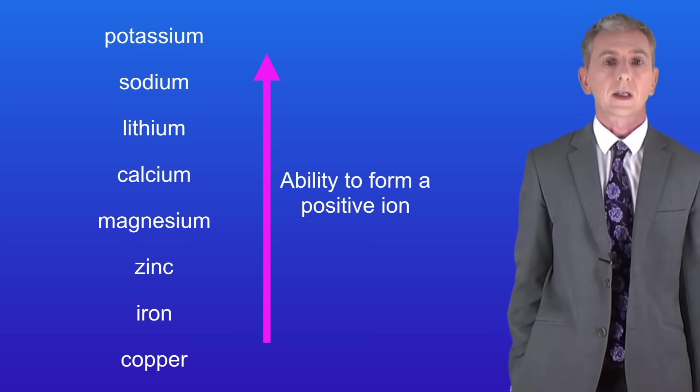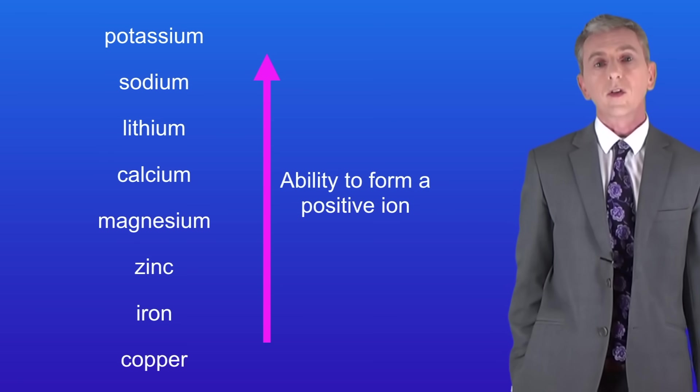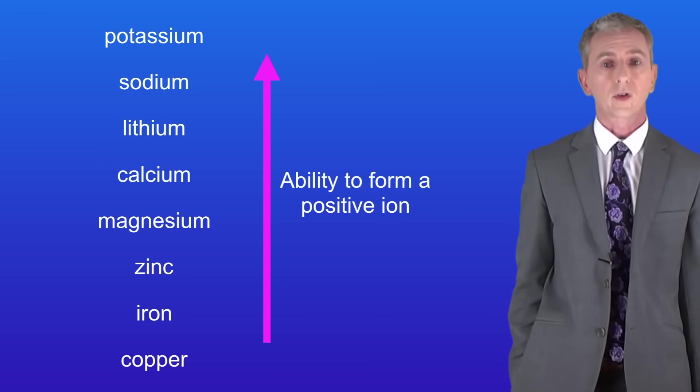So looking at the reactivity series again we can see that metals at the top such as potassium readily form a positive ion whereas metals towards the bottom such as copper are much less likely to form a positive ion.